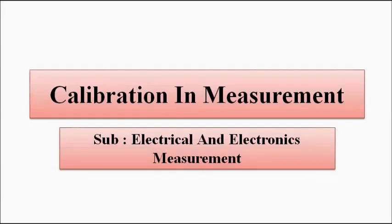Hello friends, welcome to Engineering Tutorial. So far in the electrical and electronics measurement section, we have discussed the performance characteristics — the static and dynamic characteristics, accuracy, errors, the different types of errors, and the different ways of representing accuracy. In this video, we are going to discuss a very important concept related to performance characteristics, which is calibration of a measuring instrument.